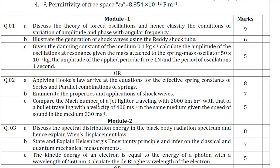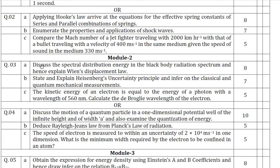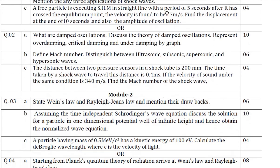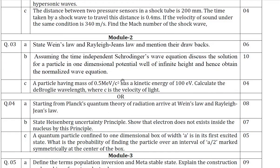Module two is of modern physics and quantum mechanics. From model question paper two, module two questions include: discuss the spectral distribution of energy in the black body radiation spectrum and hence explain Wien's displacement law. Problems will be there. In paper one, question number three and four are of module two, covering Stefan's law, Wien's law, and Rayleigh-Jean's law, along with their drawbacks. These are all ways of framing the questions.